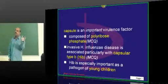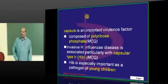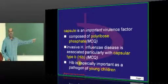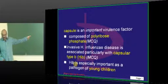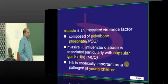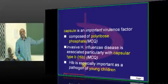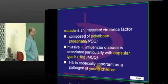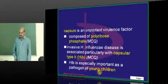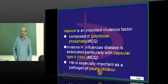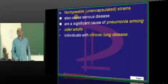There are many subtypes based on the capsule, but type B is the most dangerous. That is why we have developed a vaccine specifically targeting capsular type B — the Hib vaccine. Hib type B is the most important pathogen of Haemophilus influenzae in young children.